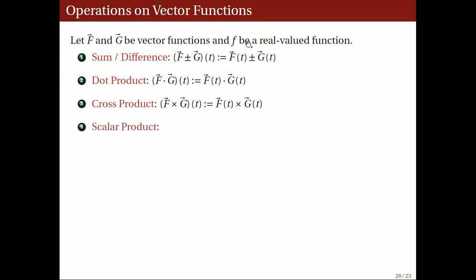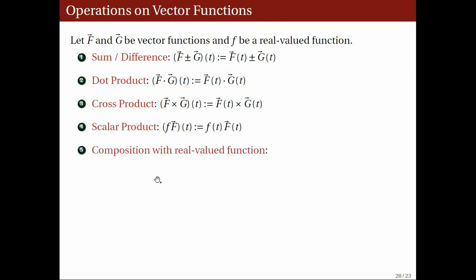The scalar product of small f and big F is defined to be the function whose value at t is the product of the vector capital F of t and the scalar small f of t. We may also take the composition of a vector-valued function with a scalar function. We define the composition big F circle small f to be the function whose value at t is the value of big F at small f of t.